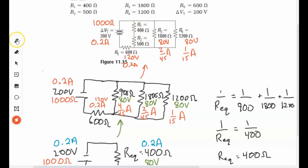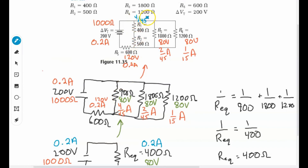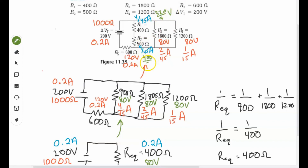Since the current through each is 4/45 amps, we solve for the voltage across each using V = IR. For R1: (4/45) times 400 = 320/9 volts. For R2: (4/45) times 500 = 400/9 volts. Checking with Kirchhoff's voltage law for series: 320/9 plus 400/9 equals 720/9, which is exactly 80 volts. And now you're done solving the mixed circuit.